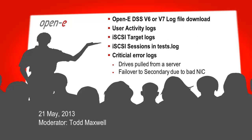We'll show this in DSS V6 and V7, but mainly today is going to be V7 — where to download the log file. I'm going to go over things like user activity logs, the iSCSI target logs, the sessions and the test-out log, critical errors and drives being pulled, and things that happen in failover to secondary due to bad NICs. So let's go ahead and begin.